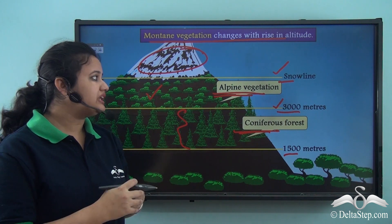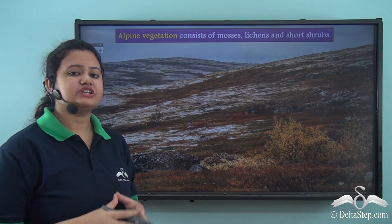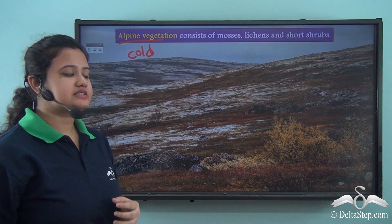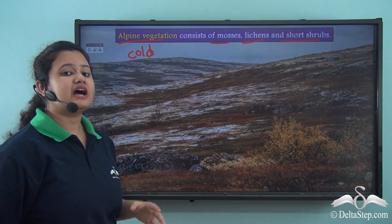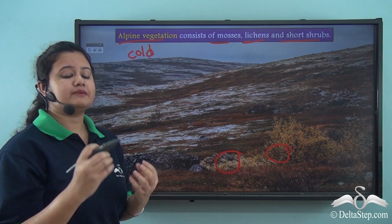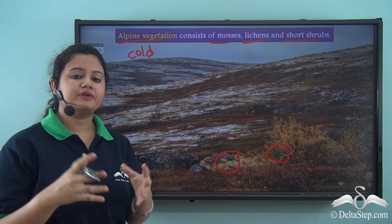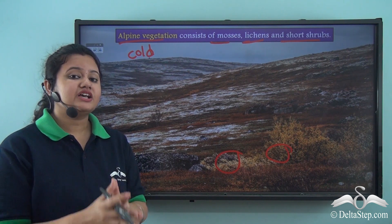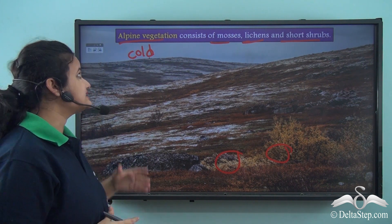Alpine vegetation is a type of vegetation found in cold, dry regions. It mostly consists of mosses, lichens, and shrubs. These plants are extremely short in height and remain close to the ground in order to protect themselves from cold icy winds that are very common at high altitudes. Some flowering plants grow here during summer months but wither away with the onset of winter.